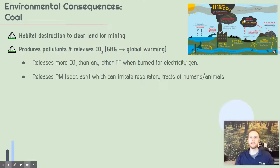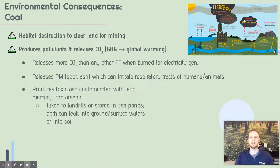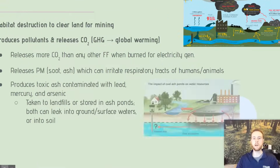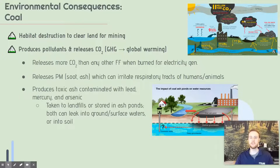Another point is that there's a lot of toxic ash produced, which contains lead, mercury, and arsenic. This ash is normally taken to landfills, but it can also be disposed of in ash ponds — basically pools of water containing ash near where it is produced. The problem is that these can leak into surrounding soil and ground and surface water, which can be a huge problem for organisms in those areas. They can be poisoned by lead, given cancer through arsenic, and the mercury also acts as a neurotoxin.